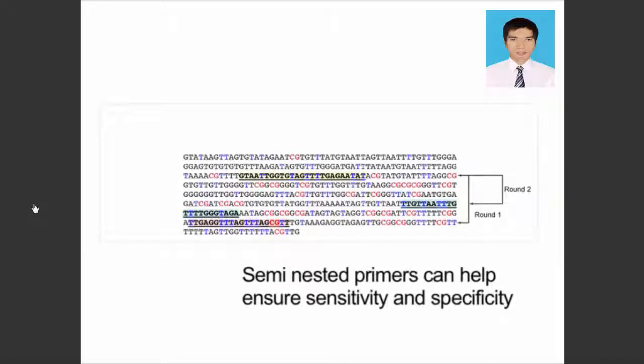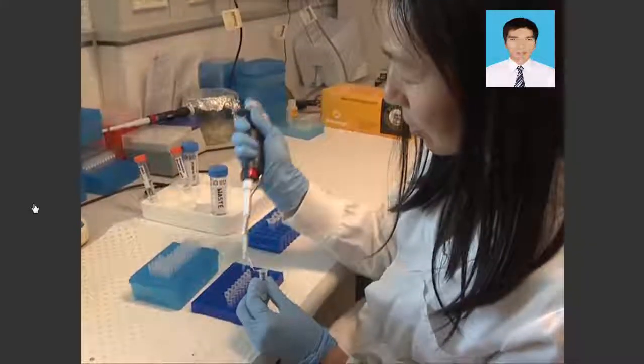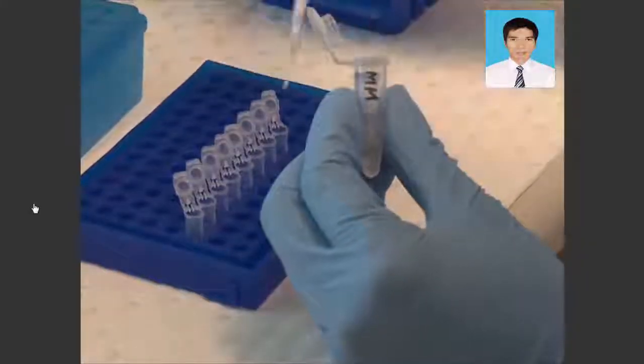Finally, design nested or semi-nested primer sets to ensure specificity or sensitivity of the PCR reaction if required. Prepare PCR amplification reaction mixtures in 25 µL aliquots for optimization.